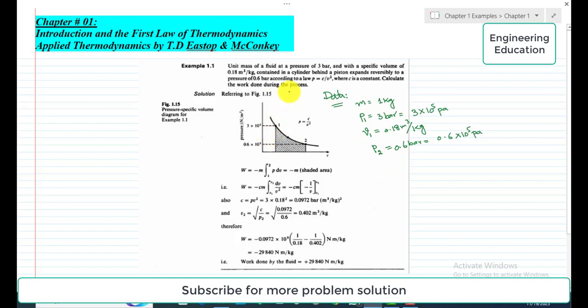This is state one. Initially it has pressure 3 bar and specific volume is 0.18 cubic meter per kilogram. And it expands according to this law P equals C by V square, and it goes to state two after expansion.